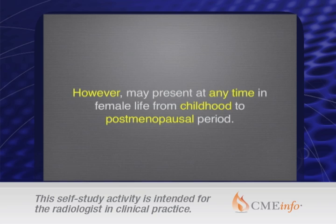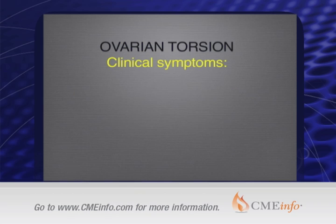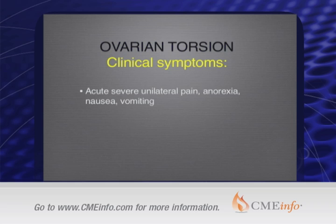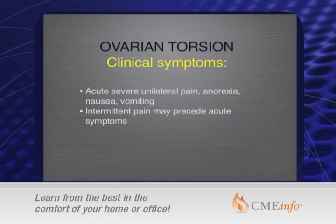This is actually one of the cases where we rely very heavily on clinical symptoms. They are acute severe unilateral pain, anorexia, nausea, and vomiting. Intermittent pain may precede acute symptoms because the torsion can be intermittent.